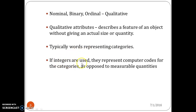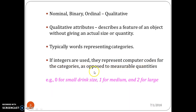If integers are used, they represent computer codes for the categories as opposed to measurable quantities. For example, for small you can assign the number 0, for medium the number 1, and for large the number 2 — you can say 0, then 1, then 2.